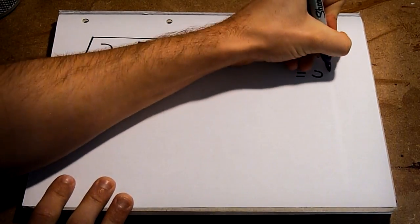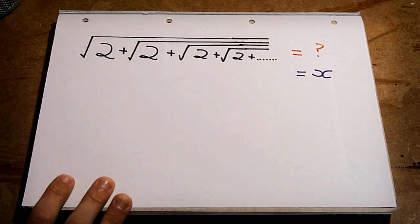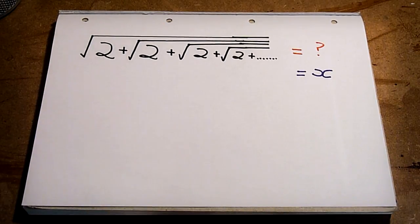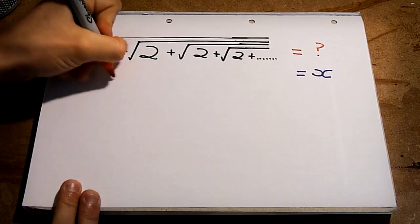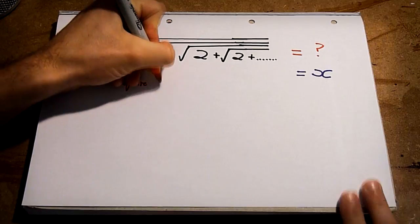Assume the expression has some value x. Now, it could be that x equals infinity, it could be any real number, we don't know yet. First, we square both sides.